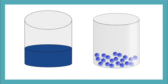Liquids are able to flow and change their shape because the atoms and molecules are not fixed. They're able to slide past each other, and they move faster than particles in a solid. The particles in a liquid have more free space between them than in a solid. This makes it easier for a liquid to flow and change shapes, but since the particles are still close together, a liquid is hard to compress or make smaller.